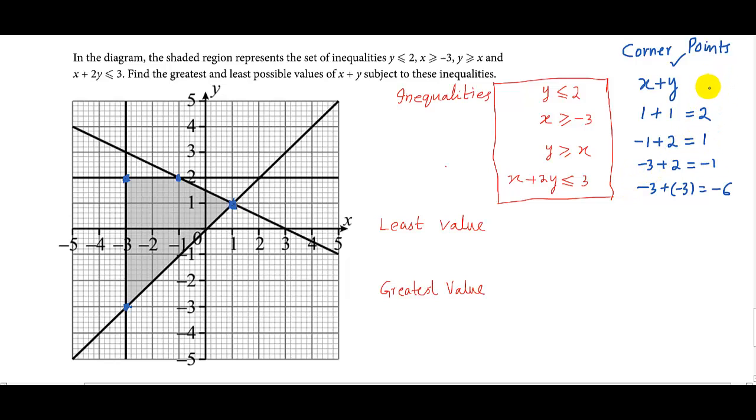Just look at these values. The maximum value here is 2, so it is the greatest value out of these four values. The greatest value is 6 at x equals 1 and y equals 1. And the least value, the minimum value, is minus 6. The least value is minus 6 at x minus 3 and y minus 3.